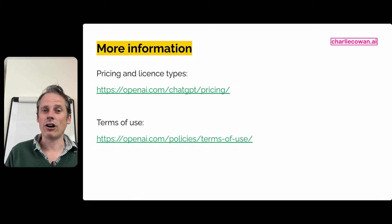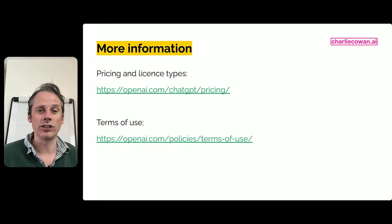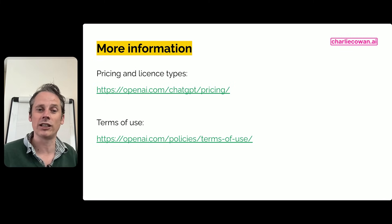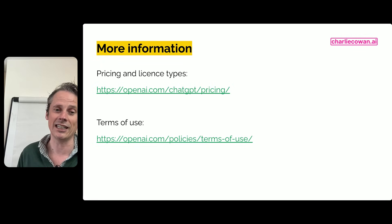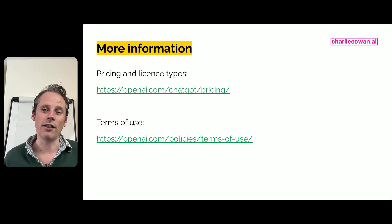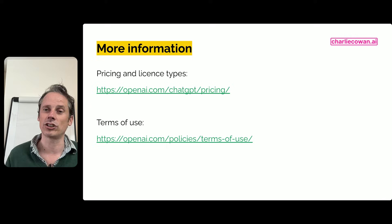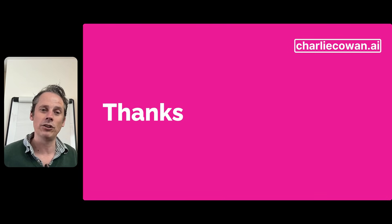That brings us to the end of our rapid-fire guide to getting set up on ChatGPT Teams. For more information on license types and the difference between Team and Enterprise, go to openai.com/chatgpt/pricing. To understand the terms and conditions, security implications, and what moving to Teams means for your company's intellectual property, go to openai.com/policies/terms-of-use. Thank you very much — hope it was useful. If you've got any questions, come to charliecowen.ai and I'm very happy to help you on your journey.